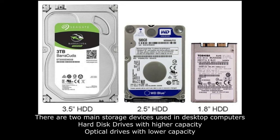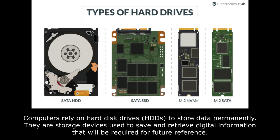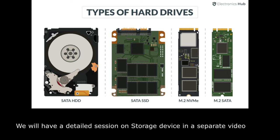There are two main storage devices used in desktop computers: hard disk drives with higher capacity, available in fixed or removable format, and optical drives with lower capacity, which need separate storage. Computers rely on hard disk drives, HDDs, to store data permanently. They are storage devices used to save and retrieve digital information for future reference. Hard drives are non-volatile, meaning they retain data even when they do not have power. The information storage remains safe unless the hard drive is destroyed or interfered with. We will have a detailed session on storage devices in a separate video.